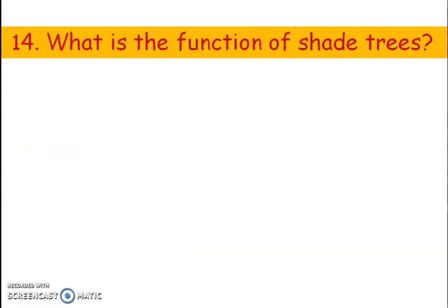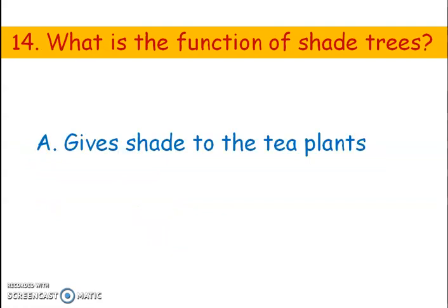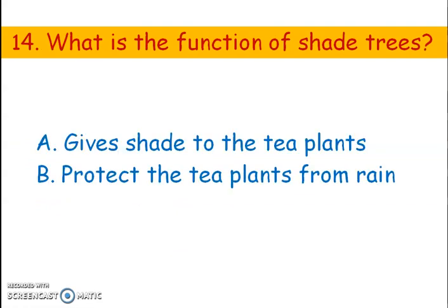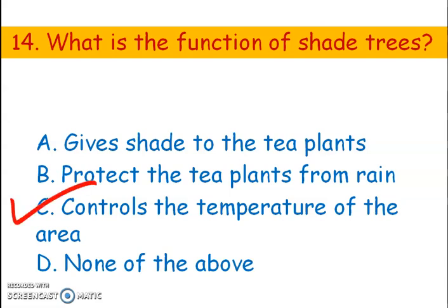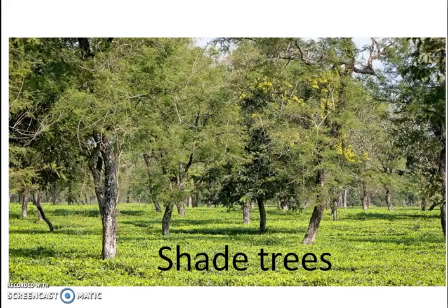Next question. What is the function of shade trees in a tea garden? Options: A) Give shape to the plants, B) Protect the tea plants from rain, C) Control the temperature of the area. The right answer is option C — shade trees in a tea garden help control the temperature of the area, reducing it by around 3 to 4 degrees.